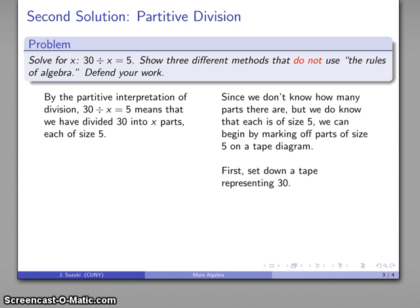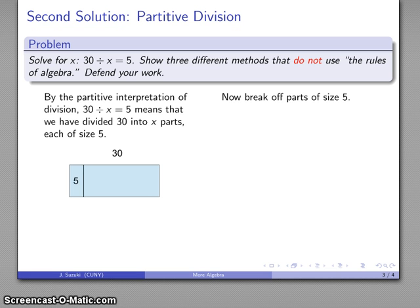Let's go ahead and do that. We don't know how many parts there are, but we do know each of them is size 5. We can mark down these operations on a tape diagram. I'll start with the tape that represents 30, and I know each piece is going to be size 5.